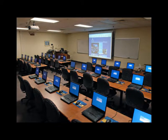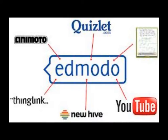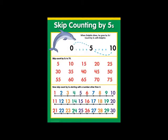This math unit includes several products students will create using technology that addresses specific multiple intelligences. In one product, students will submit a Word document on Edmodo.com using a computer with internet access. They will summarize counting strategies that they have used in class and give examples. This meets the comprehension level of Bloom's Taxonomy. This product also addresses visual, logical-math, kinesthetic, verbal, and intrapersonal intelligences.